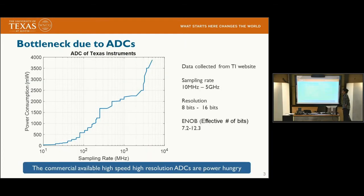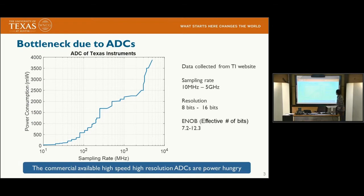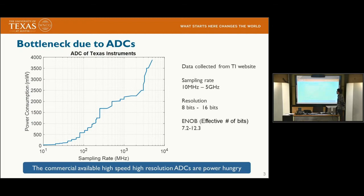This figure shows the ADC power consumption bottleneck, with data collected from a website. The X-axis shows the sampling rate from 10 MHz to 10 GHz, the resolution is from 8 to 16 bits with effective number of bits from 7 to 12, and the Y-axis shows power consumption in milliwatts. At one gigahertz, the power consumption is about 2,000 milliwatts — about 2 watts. If your ADC consumes 2 watts, you cannot hold your phone because it would be too hot.